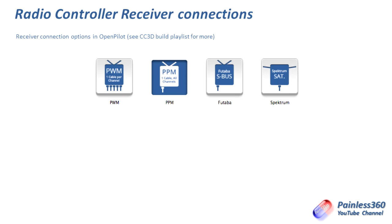These are the four connection options available when installing OpenPilot onto a CC3D flight controller. Lots of other flight controllers also allow connections using PWM, PPM, Futaba, and some of the latest ones allow a Spectrum satellite receiver connection as well. I'll go through each in turn, covering the good stuff, the bad stuff, and the highlights of what each one does.